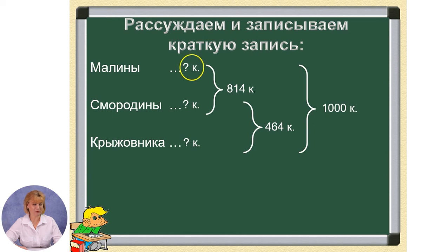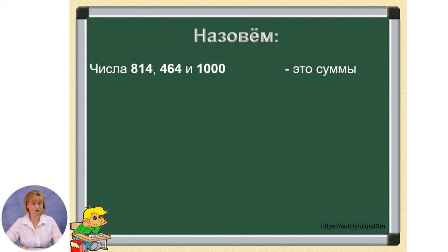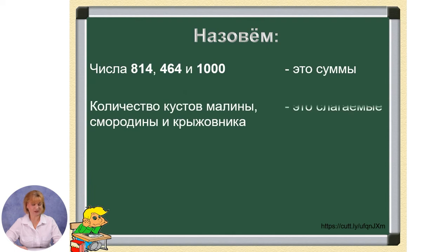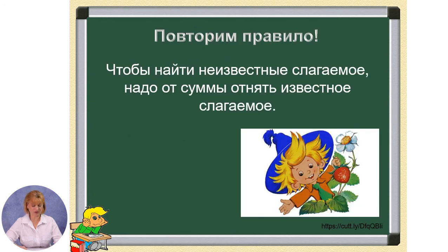Выделим главные вопросы. Определим, каким компонентом являются известные и неизвестные числа. Числа 814, 464 и 1000 — это суммы. А количество кустов малины, смородины и крыжовника — это слагаемые. Повторим правило нахождения неизвестного слагаемого: чтобы найти неизвестное слагаемое, надо от суммы отнять известное слагаемое. Так как слагаемых три и все они неизвестны, работаем с числами трёх сумм.